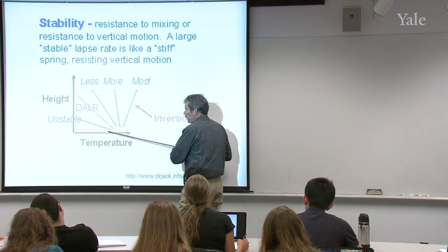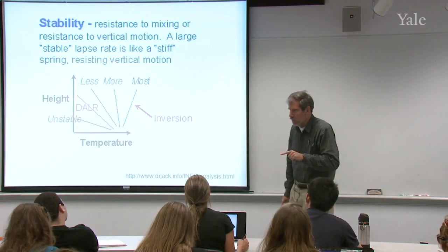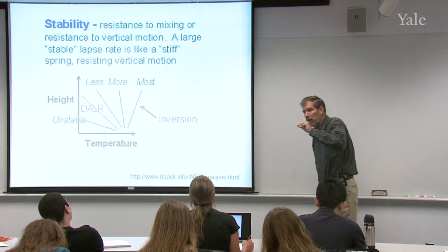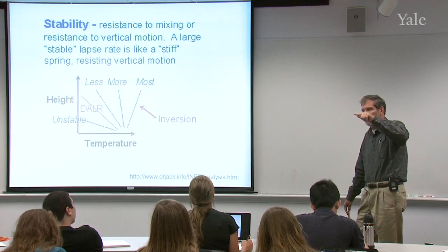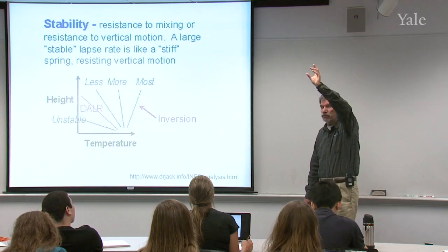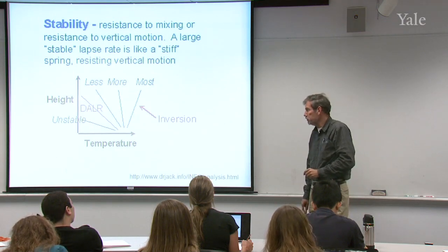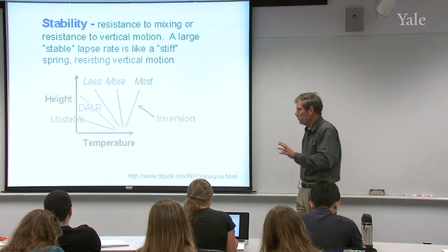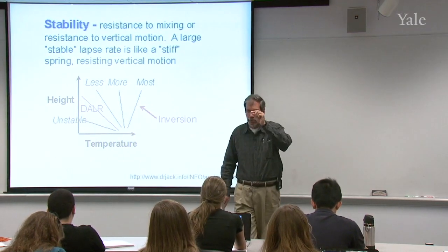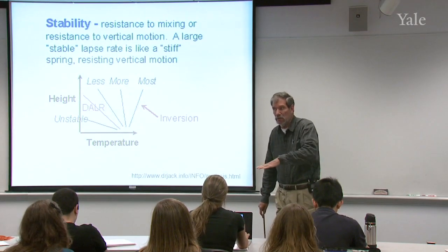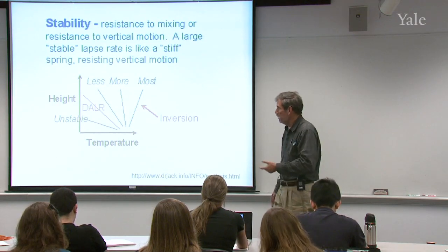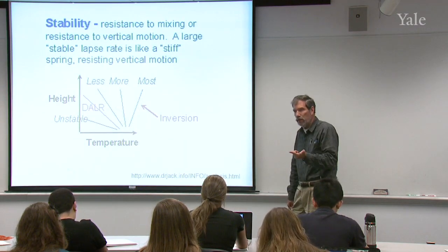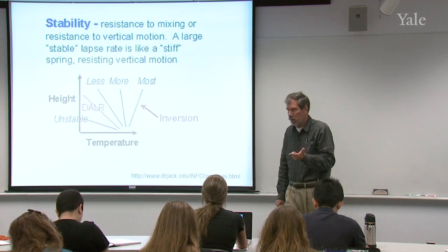The unstable case is where you have a very strong decrease in temperature with height. Then if you lift a parcel along the dry adiabatic lapse rate, it's actually getting warmer than its environment. When it's been lifted a little bit, it finds itself warmer than its local environment. That means it's buoyant and it's going to rise further. So you want to practice sketching these diagrams to be sure that you always get the right answer about what the parcel is going to do.